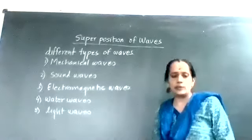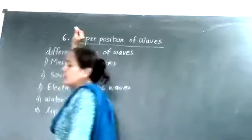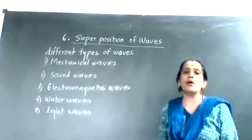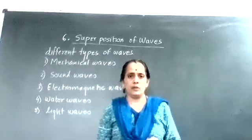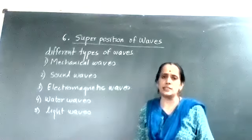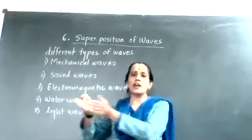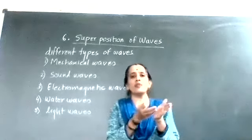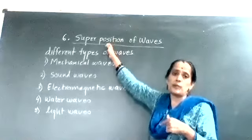Today we are going to start the new topic: superposition of waves, which is chapter number 6. Previously we have seen the oscillation topic, in which we studied simple harmonic motion — two types: linear SHM, where a particle moves along a straight line to and fro, and angular SHM, where a particle moves along a curved line. Using that SHM concept, we are now going to consider the principle of superposition of waves.